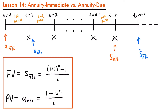The main difference between an annuity immediate and an annuity due is when the payments are being made and therefore when the valuation point is. For annuity immediate — what we've been working with — payments are made at the end of a period. What's new is the annuity due, where payments are made at the beginning of each period. Because of that, the valuation point for both the present value and future value of an annuity due is one period later than for an annuity immediate.